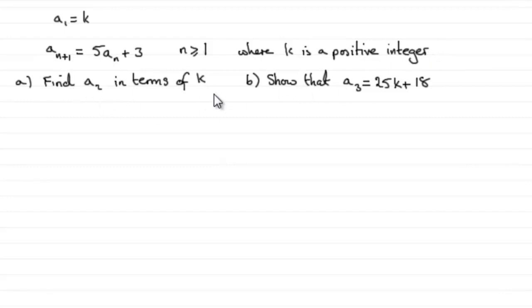And we've got two questions here. Part A: we've got to find the second term in the sequence a₂ in terms of k. And then in part B, we've got to show that the third term in the sequence a₃ is equal to 25k plus 18.